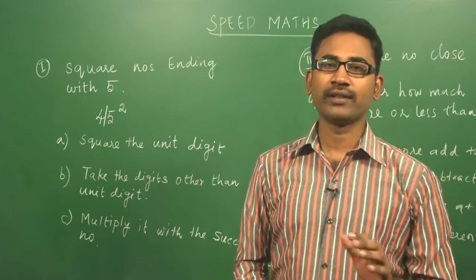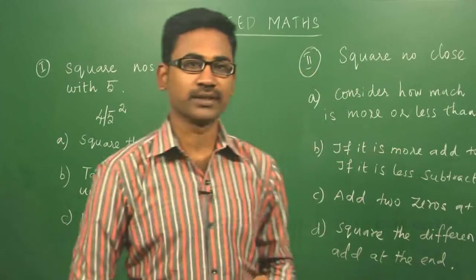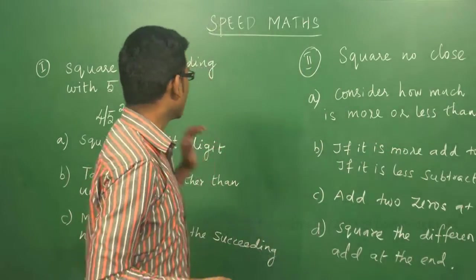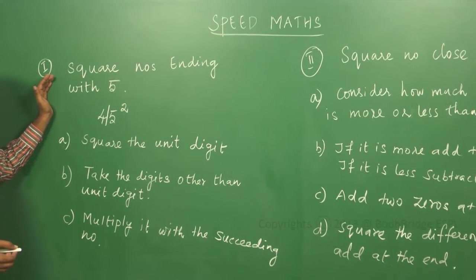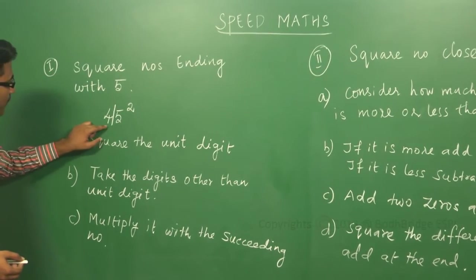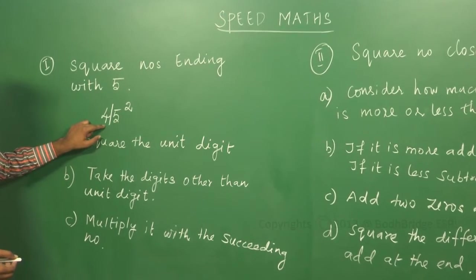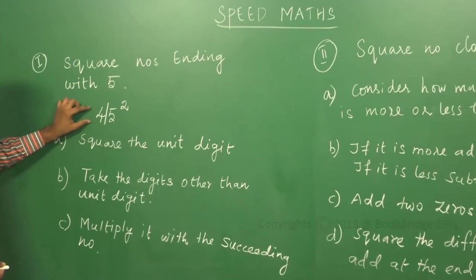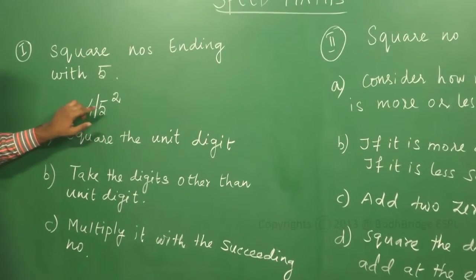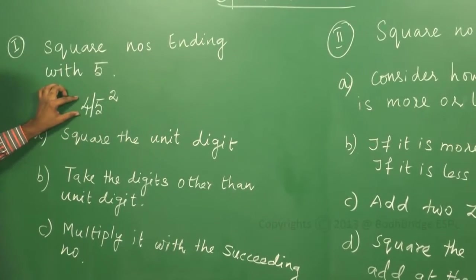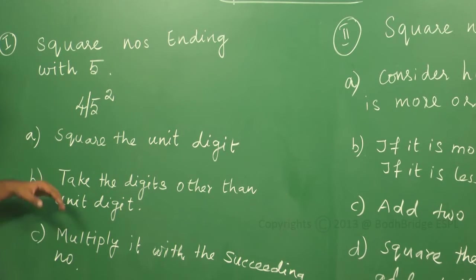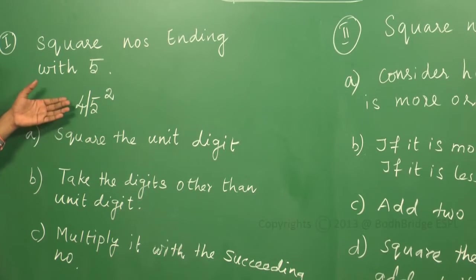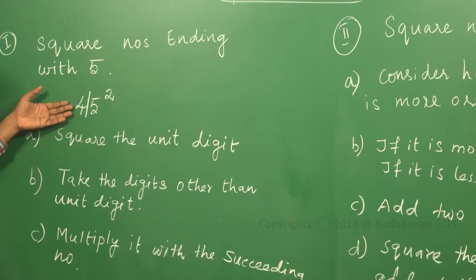Let me see how to find the square numbers. The first topic is square numbers ending with 5. For example, 45 squared — this is a number which is ending with 5. If you want to get the square value of this given number, you have to follow this procedure. I will explain this procedure and based on this, I will explain this example.